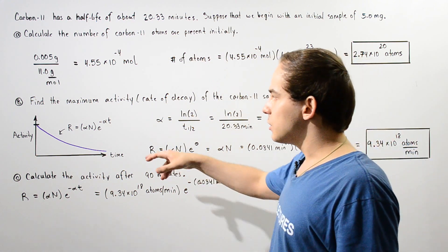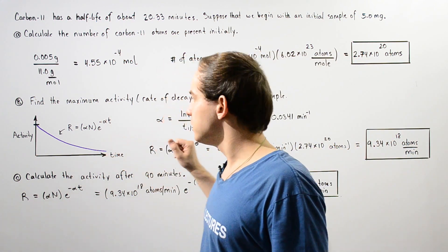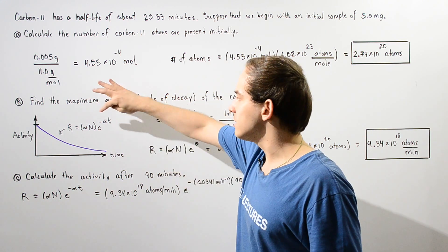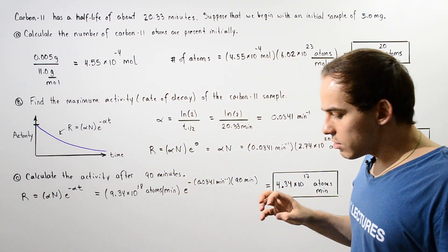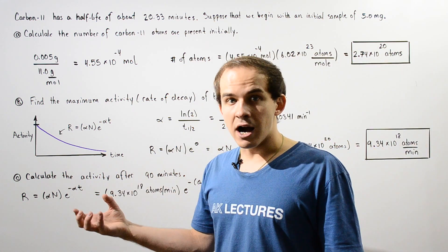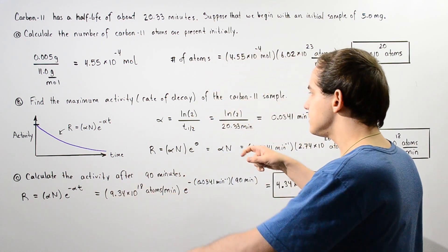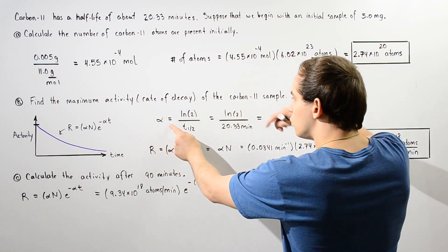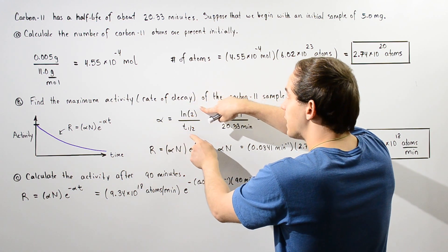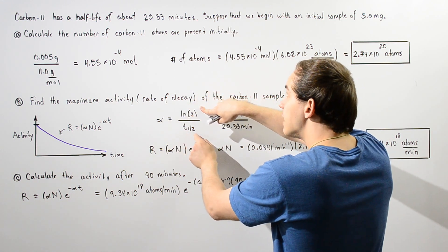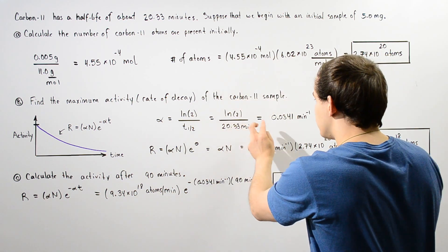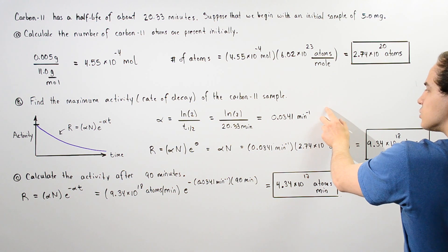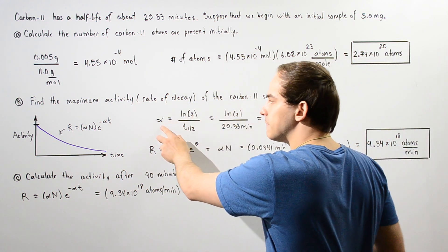Before we actually use this equation and plug in zero for the time, we have to calculate what our decay constant alpha is. Now the relationship between alpha, our decay constant, and the half-life is given by this equation. So we see that alpha is equal to natural log of 2 divided by the half-life. We divide the two and we get 0.0341 minutes to the negative 1. So that means this is our alpha value.